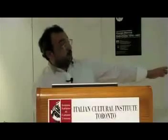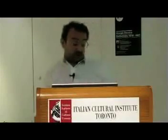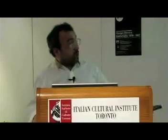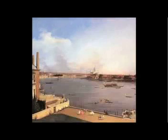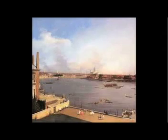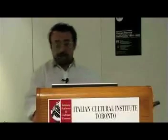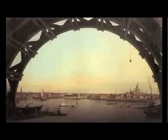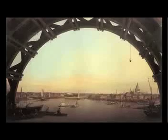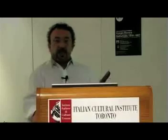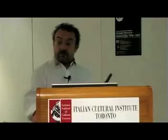As I was saying, these are the Vedutismo, which initially started with Van Wittel. For example, this one is a Canaletto in London. It's like a photograph — the light, the shadow. And also this one: it's even more a photograph because of that basket hanging there. That's a photographic detail. Another painter would have skipped it, would not have painted it. But because he had to be faithful to what he saw, he did.